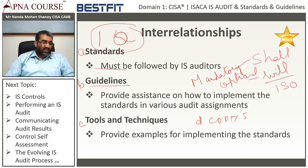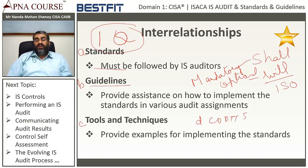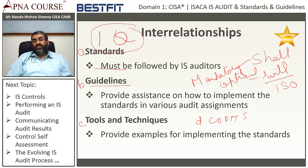You need to understand the basic difference in the connotation of 'shall' and 'will'. For most of us colloquially, 'shall' feels optional and 'will' feels mandatory — but we need to unlearn this. From a legal perspective, in all ISO standards, wherever 'shall' is mentioned it is mandatory. As an IS auditor, you can expect a definite question from this concept — it is a high importance item.